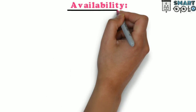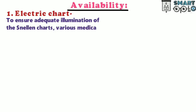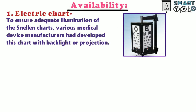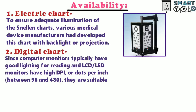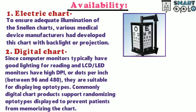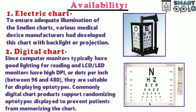Availability of Snellen's chart: First, an electric chart — to ensure adequate illumination, various medical device manufacturers have developed this chart with backlight or projection. Second, digital chart — since computer monitors typically have good lighting and LCD or LED monitors have high DPI between 96 and 480, they are suitable for displaying optotypes. Digital chart products commonly support randomizing optotypes to prevent patients from memorizing the chart.